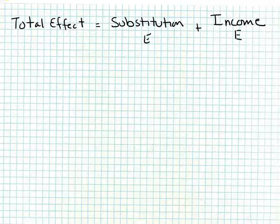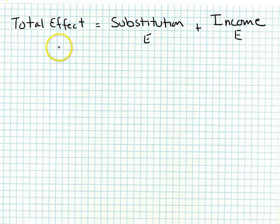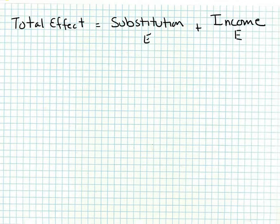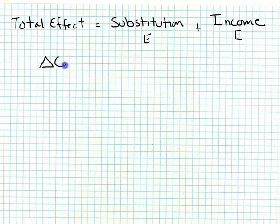What we're going to do is decompose that total effect into a substitution effect and an income effect. We can represent this by the Slutsky equation. So let's look at food and the price of food.